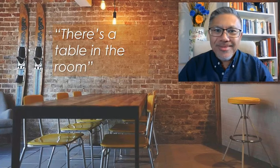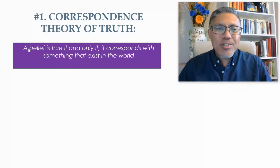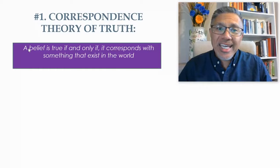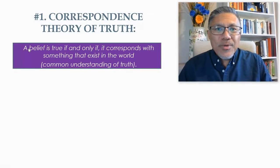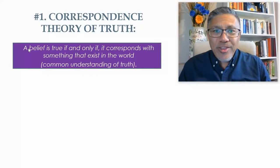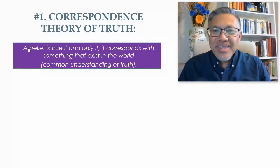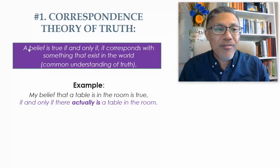This is the correspondence theory of truth. It says that a belief is true if and only if it corresponds with something that exists in the world. This is the common everyday understanding of truth. When I say I'm wearing a collared shirt, it means I'm actually wearing one — it exists in the world. My belief that a table is in the room is true if and only if there actually is a table in the room.